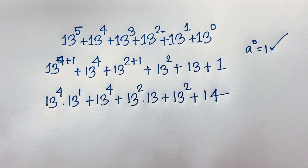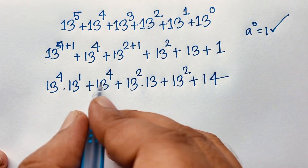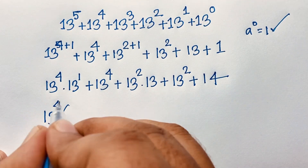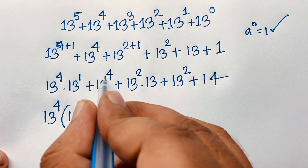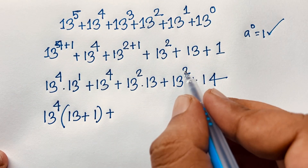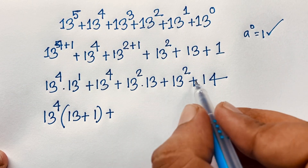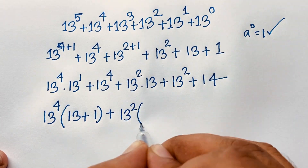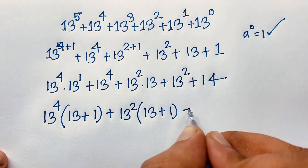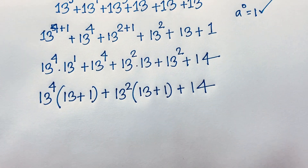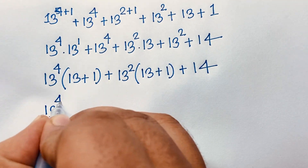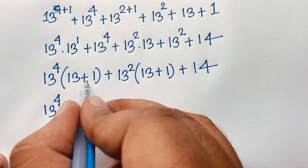Here 13 power 4 is common, so I take 13 power 4 as common: these divide to give 13 and this divides to give 1. Then here 13 power 2 is common, so I take 13 power 2 as common: these divide to give 13 plus 1, which is 14. Now you can see: 13 power 4 times (13 plus 1), which is 14.